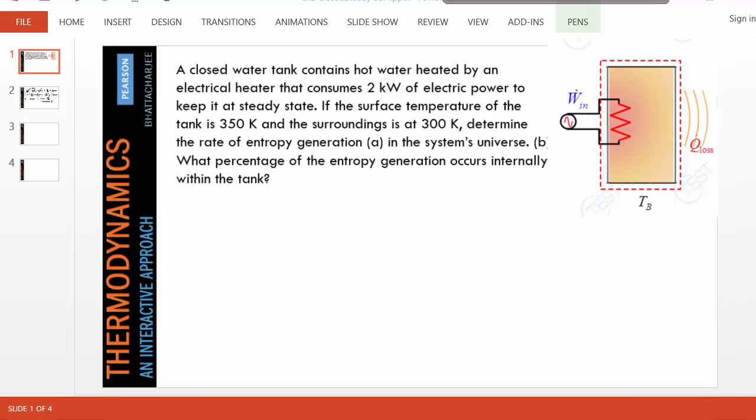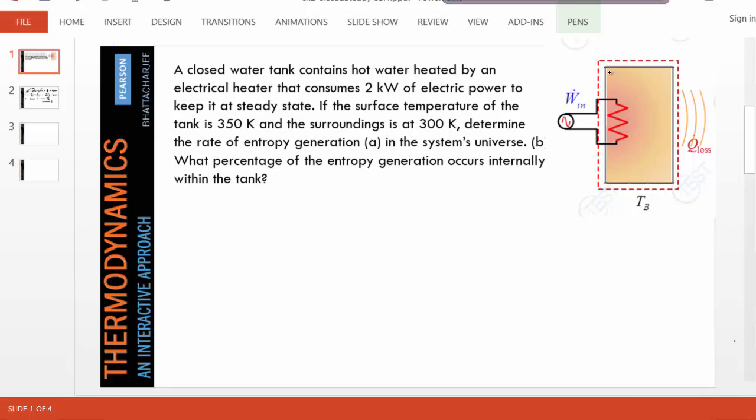To find this in the system's universe, the boundary already is outside the system, including part of the surroundings where entropy can be generated. This is my system's universe - the red boundary externally. If you want to find entropy generation internal to the system, we'll stick to this boundary. In the internal boundary, the temperature is given to be 350 Kelvin, and the external boundary temperature is 300 Kelvin.